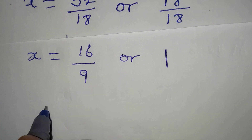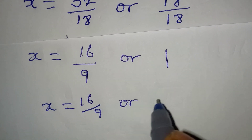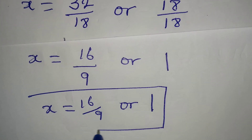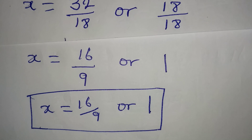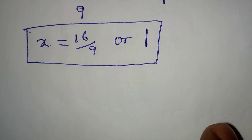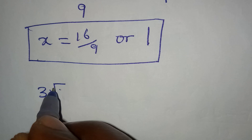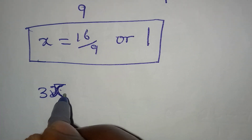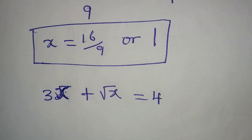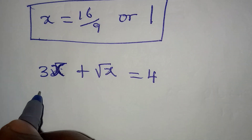So x equals 16 over 9 or 1. But both of these values may not satisfy the given equation. The equation given is 3x plus square root of x equal to 4.